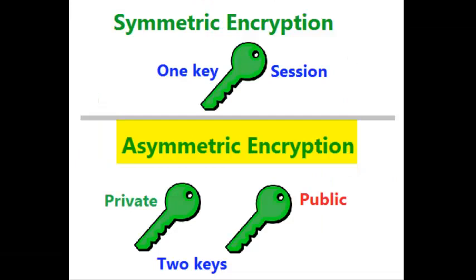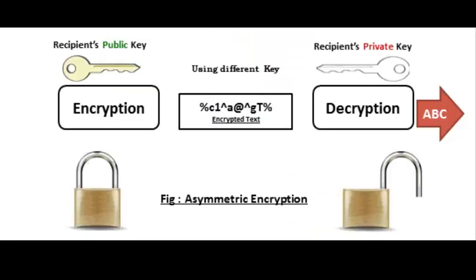In asymmetric encryption, every node will have a pair of keys: a private key and a public key. The private key, as the name suggests, is only accessible to the owner, and the public key is available to everybody. If a message is encrypted with a private key, only that node's public key can decrypt it, and vice versa. So if John wants to send an encrypted message to Mary and only Mary, he would encrypt his message with Mary's public key. And since only Mary's private key can decrypt that message, John will be able to securely send the message to Mary.